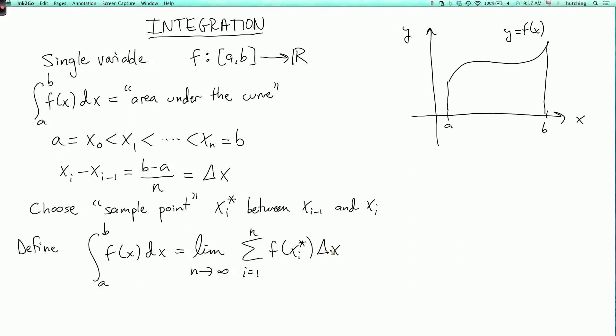And the meaning of f xi star delta x is we have an interval between xi minus 1 and xi. And we have some point xi star in here. And we look at the value of f at that point, and what we're doing is we're taking a rectangle whose base is this interval from xi minus 1 to xi, and whose height is the value of f at that sample point. And then we're summing the areas over all these rectangles.